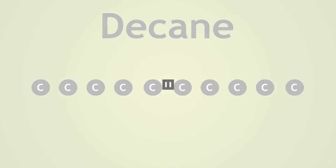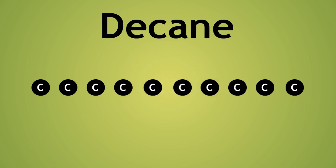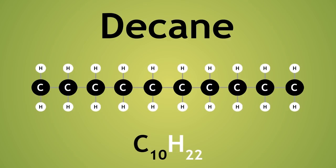For example, decane, an alkane with 10 carbons. Pause the video now and use the general formula to work out the structure of decane. You should have got the answer C10H22, where N equals 10 for the 10 carbons. Therefore, 10 multiplied by 2 equals 20, plus 2 equals 22. So 22 hydrogens.